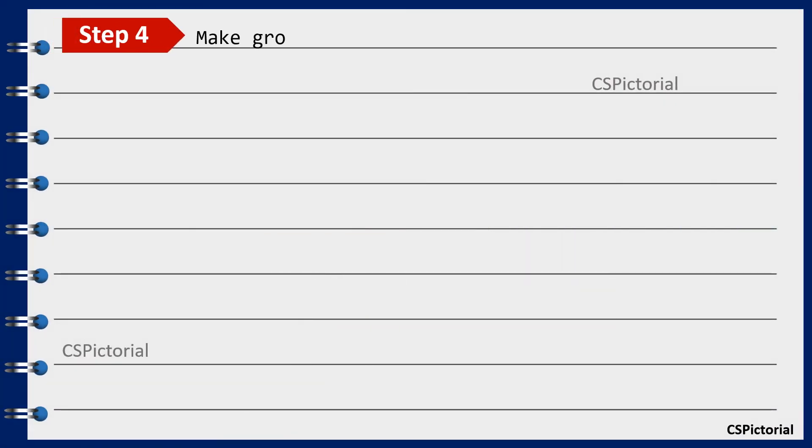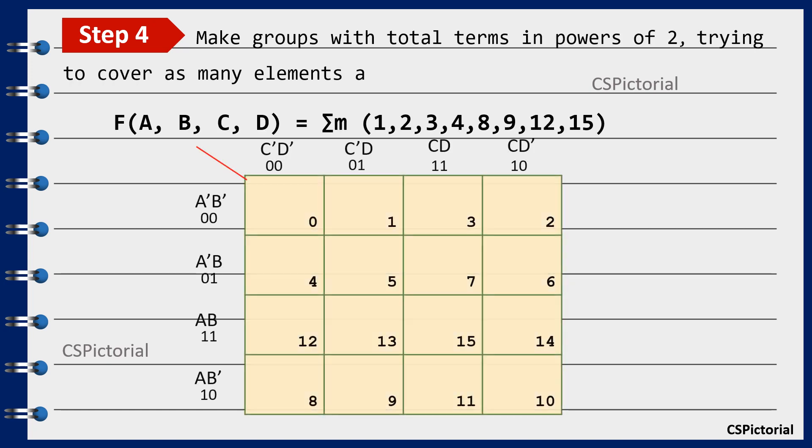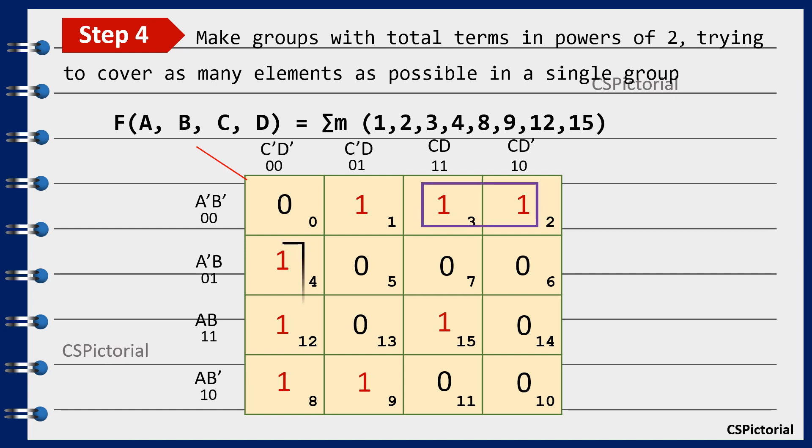Make groups with total terms in powers of 2 trying to cover as many elements as possible in a single group. A detailed video about the rules for grouping of cells in k-map is available in our channel. Check that video it will surely help you easily understand this step. Continue making groups until all ones get covered. Make larger groups, overlap groups and wrap around the table wherever possible.